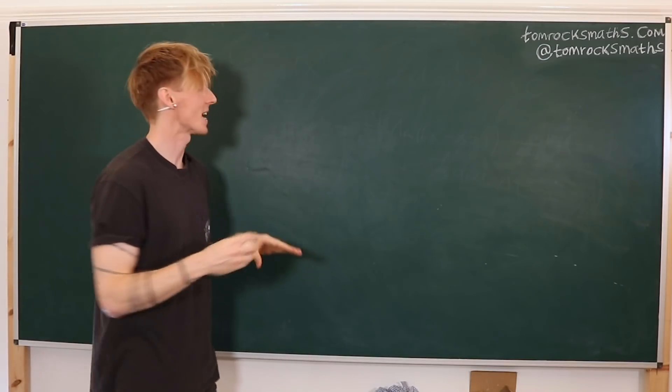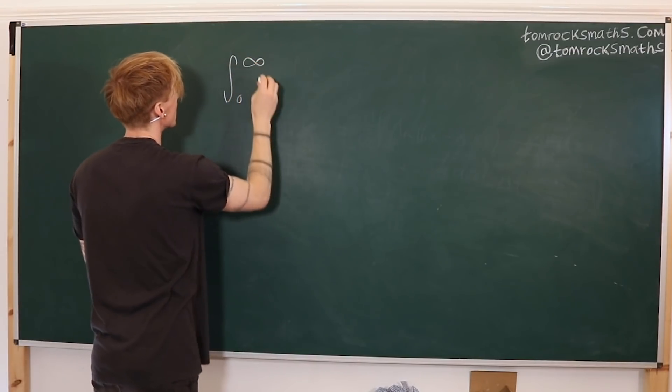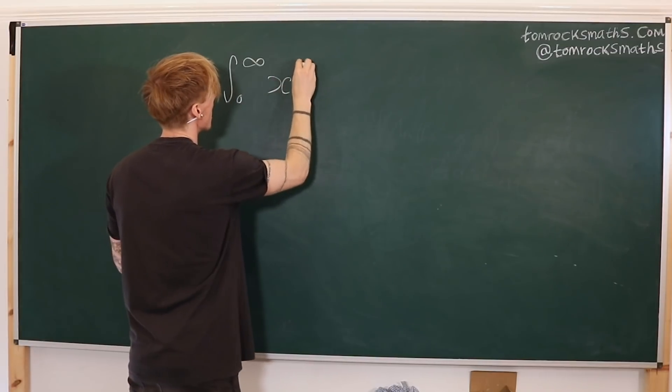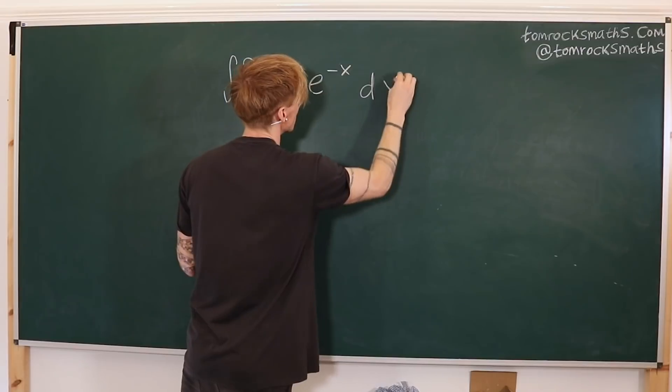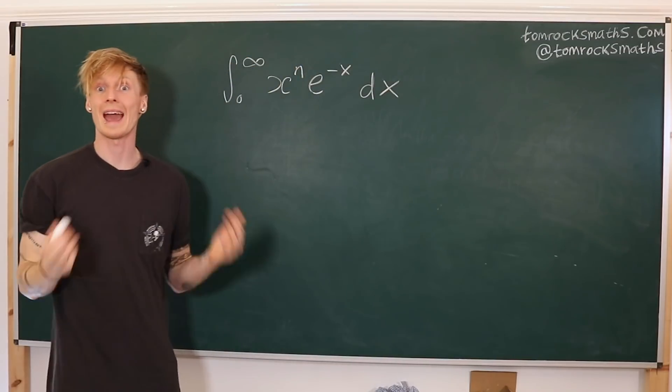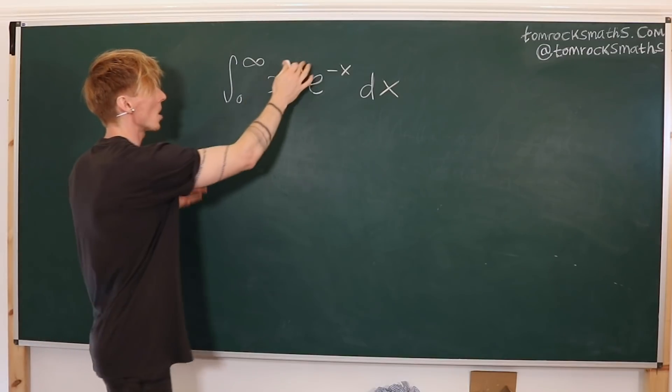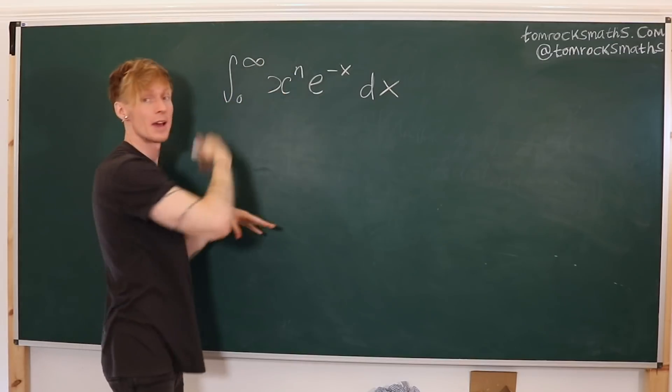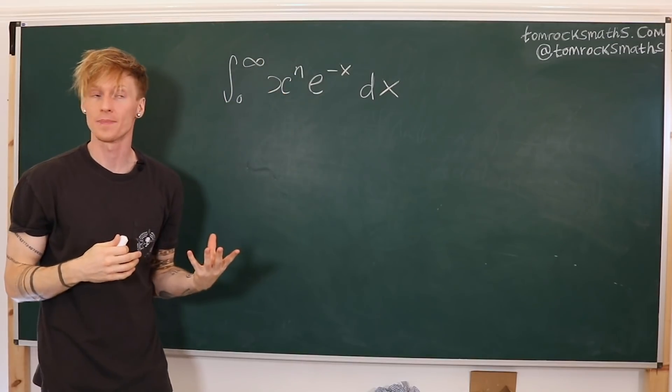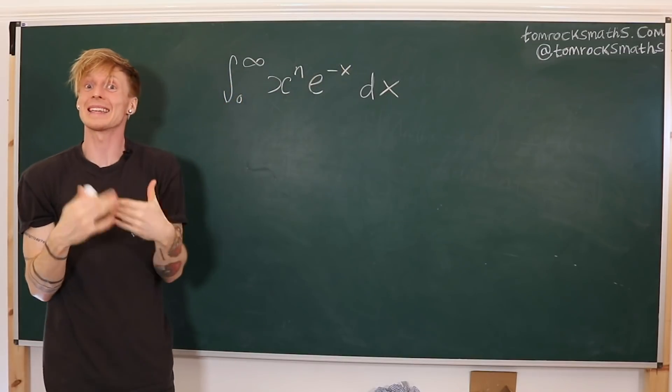So the integral we're going to look at is from 0 to infinity, x to the power n, e to the minus x, integrated with respect to x. One approach might be to try repeated integration by parts. We have a polynomial power of x here, which we can reduce by continued differentiation. And the exponential function will integrate to basically give itself.